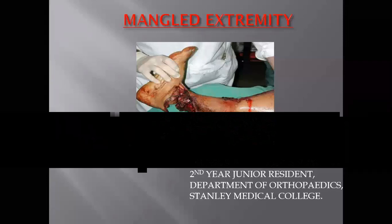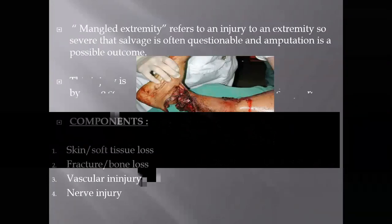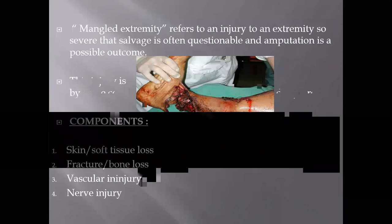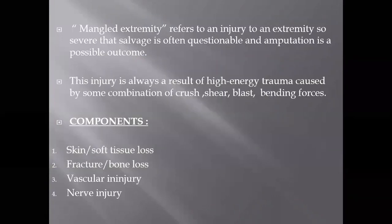Hello everyone. Today we will be seeing about mangled extremity. Mangled extremity refers to an injury to an extremity that is so severe that the salvage is doubtful and amputation is a possible outcome.